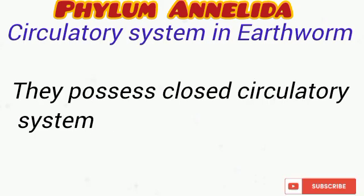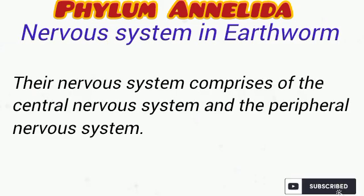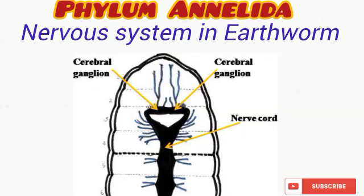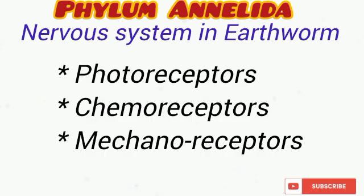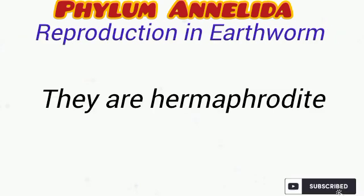The circulatory system in earthworms is closed and comprises pumping organs that perform the function of a true heart, along with various vessels. Their nervous system comprises the central nervous system and the peripheral nervous system. The central nervous system includes the brain, which has a pair of ganglia. Earthworms also possess various sense organs such as photoreceptors, chemoreceptors, and mechanoreceptors.